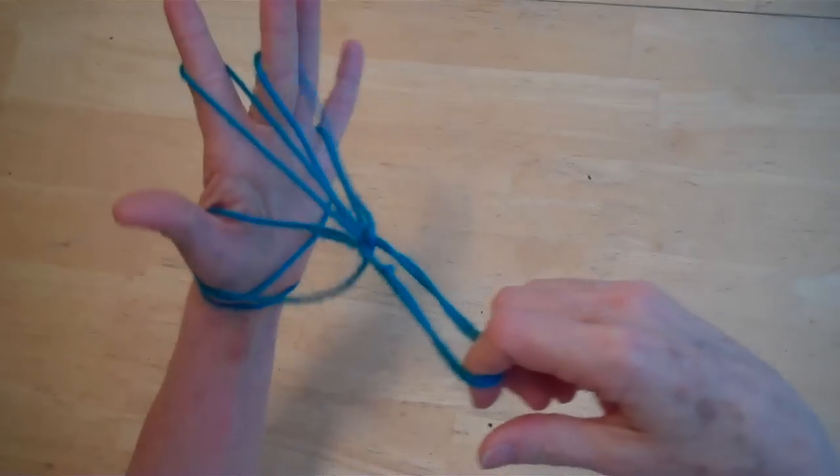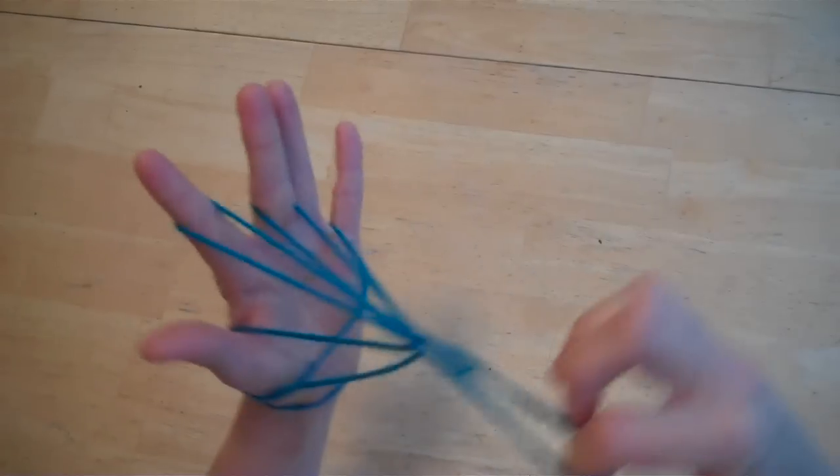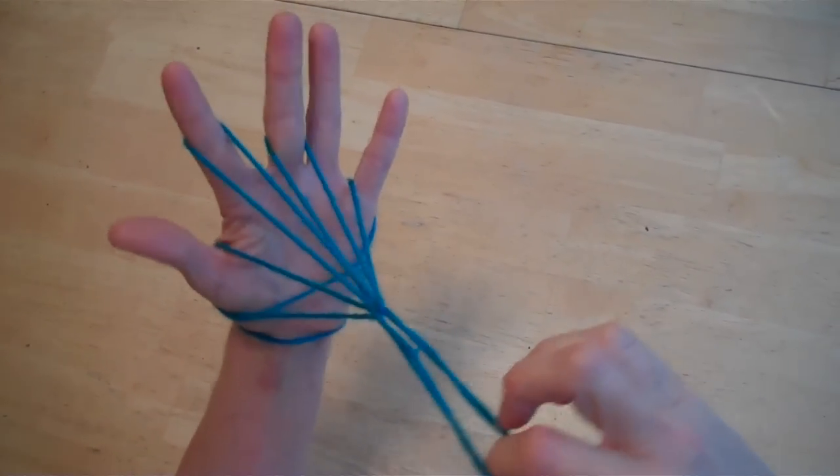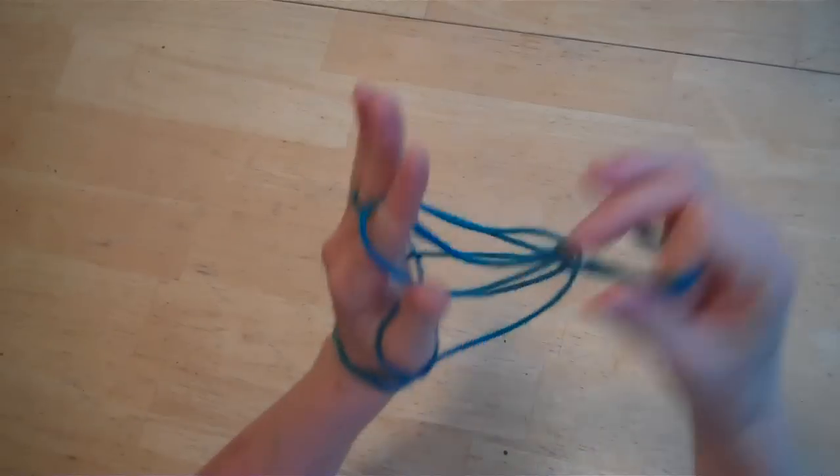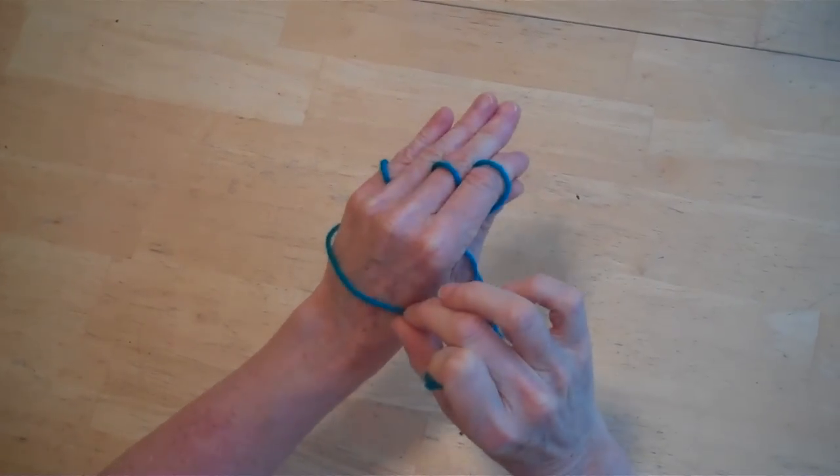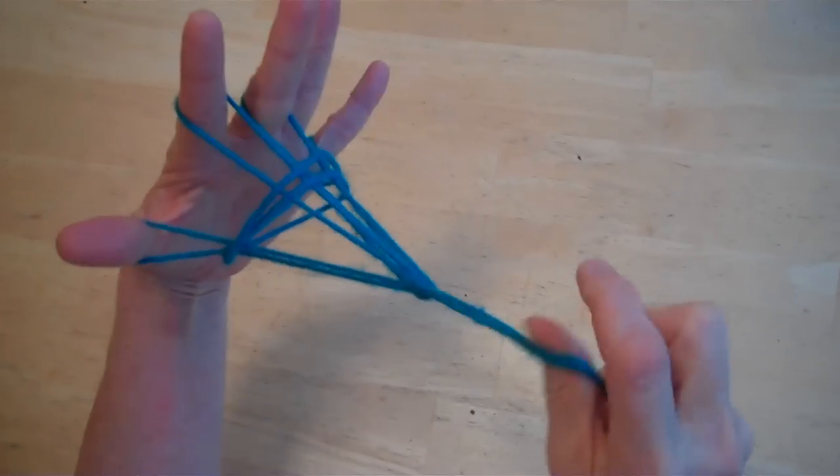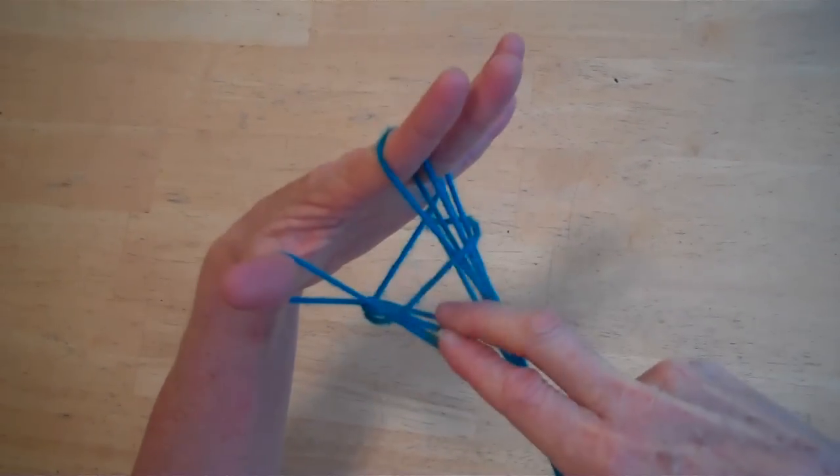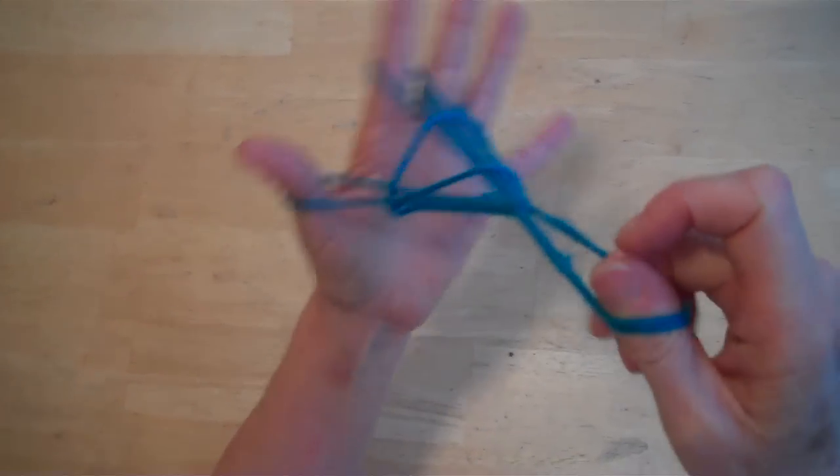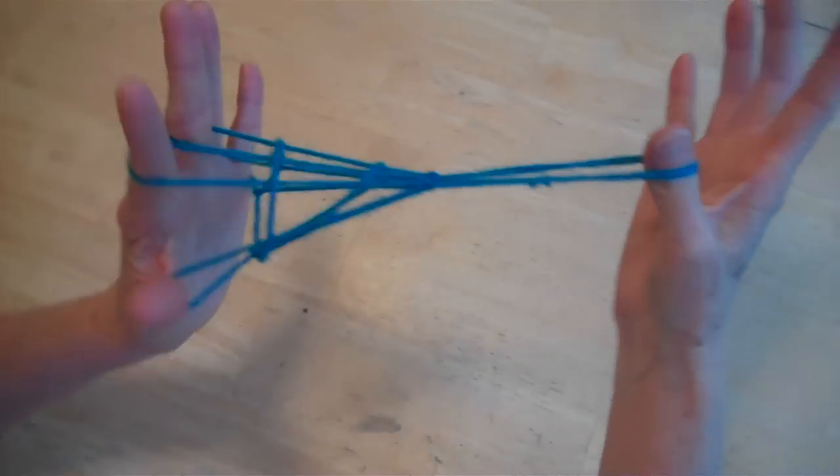The last thing you need to do is take this string on the back of your wrist and flip it up to finish the basket, the fish trap basket. Pull that up like that and like that. You may need to reach down and pull one of them up a little bit. And that is the fish trap.